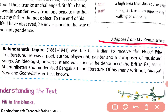Rabindranath Tagore was the first Indian to receive the Nobel Prize in literature. He was a poet, author, playwright, painter, and a composer of music and songs — also an ideologist, universalist, and educationist.